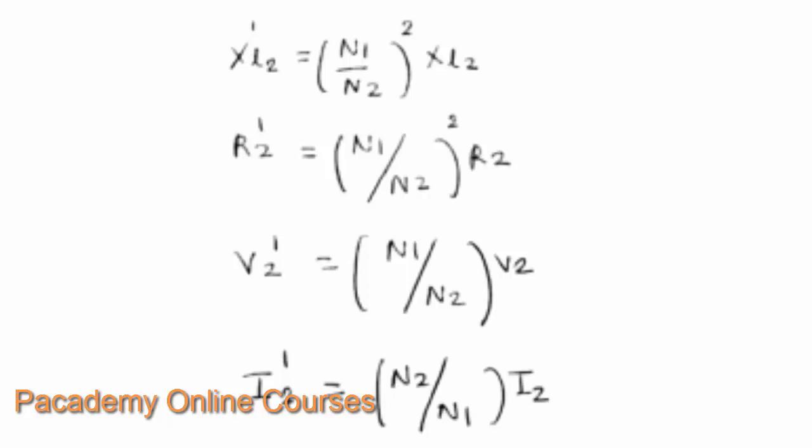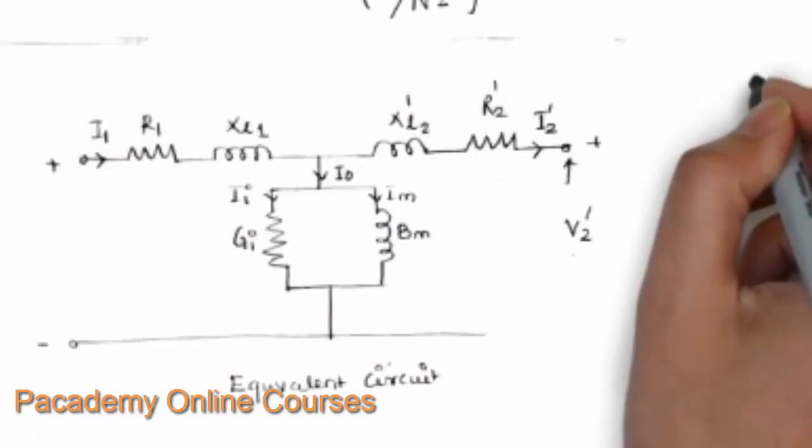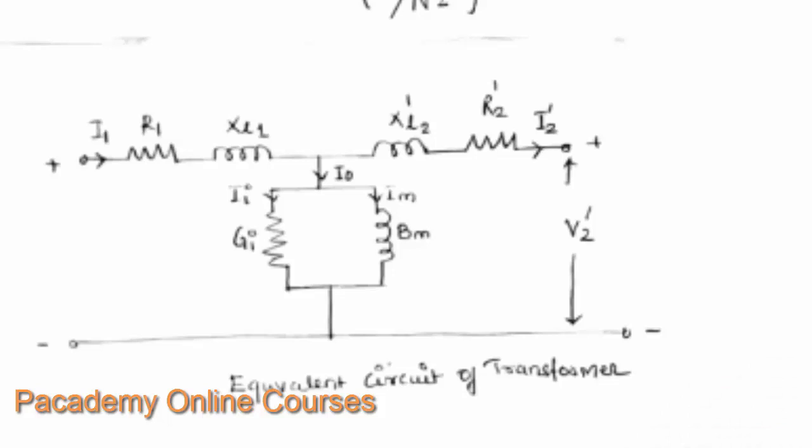We do this to draw the equivalent circuit of the transformer as a single circuit without separating the core. By moving all parameters from the secondary side to the primary side: I1 is the current drawn from the voltage source, R1 is the primary winding resistance, XL1 is the primary leakage reactance, XL2' is the secondary leakage reactance referred to the primary, and R2' is the secondary resistance referred to the primary. I2' is the secondary current referred to primary, and V2' is the secondary voltage referred to primary. I0 is the no-load current flowing in the core to supply the magnetizing field and core losses.